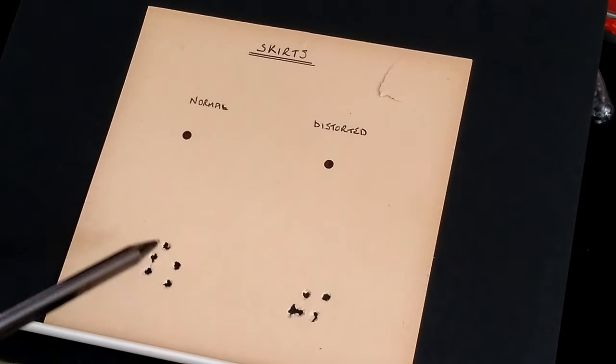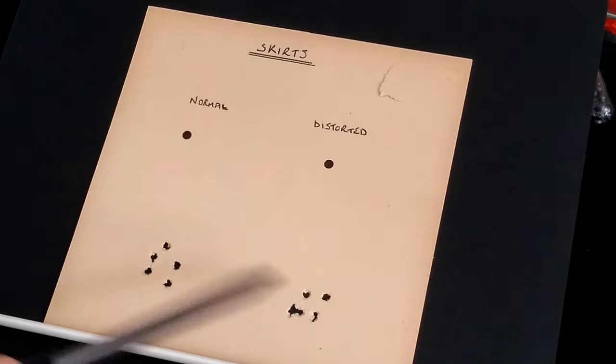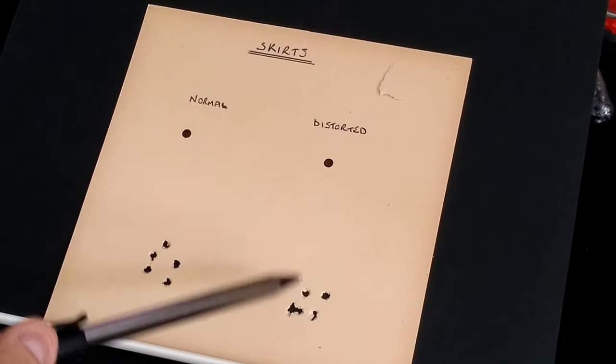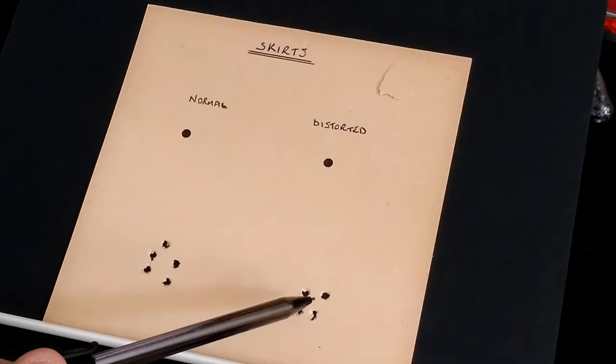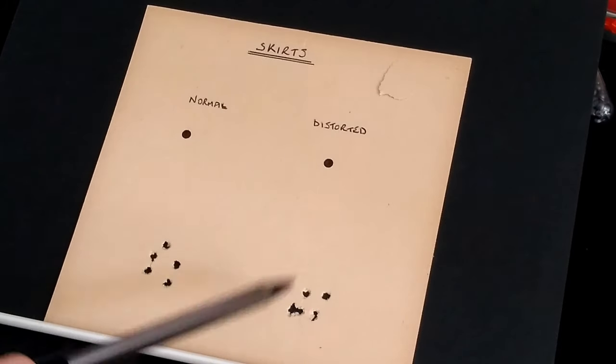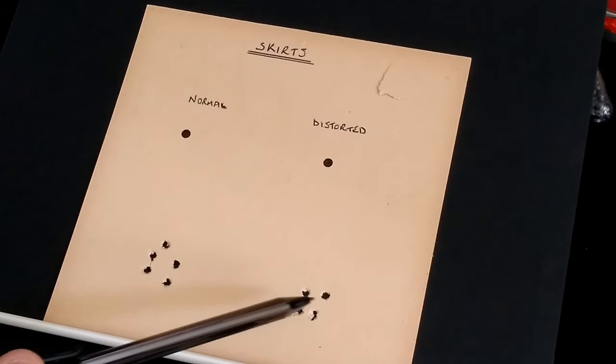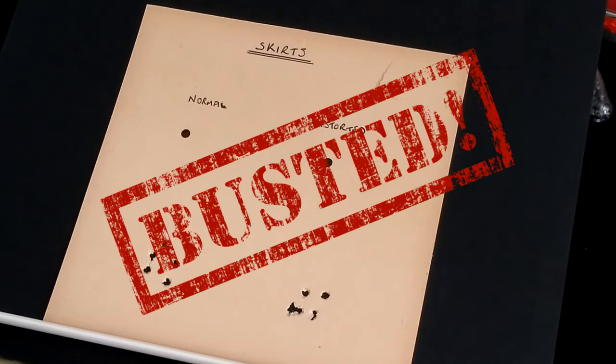So clearly those pellets that you think are going to cause flyers are not going to cause flyers. They're going to perform just as well as the normal pellets. It may be because the lead that JSB use or the mixture of lead and antimony is soft enough so that when the rifle fires the blast of air that ejects the pellet is going to reform the skirt inside the rifling so it becomes less of an issue. But an interesting one nevertheless. So we'll give that one a busted.